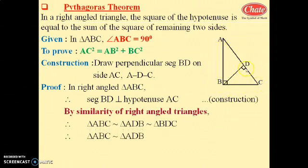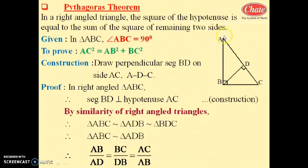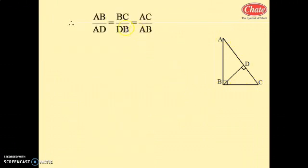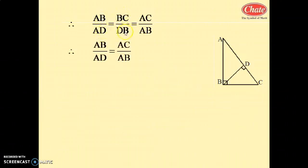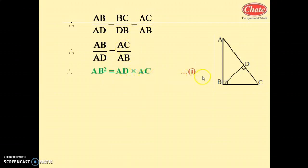First we take original triangle ABC similar to smaller triangle ADB. If these two right angle triangles are similar, then corresponding sides are in proportion: AB upon AD equals BC upon BD equals AC upon AB. We take AB upon AD equals AC upon AB — height upon height equals hypotenuse upon hypotenuse. By cross multiplication, AB squared equals AD into AC. This is equation number 1.